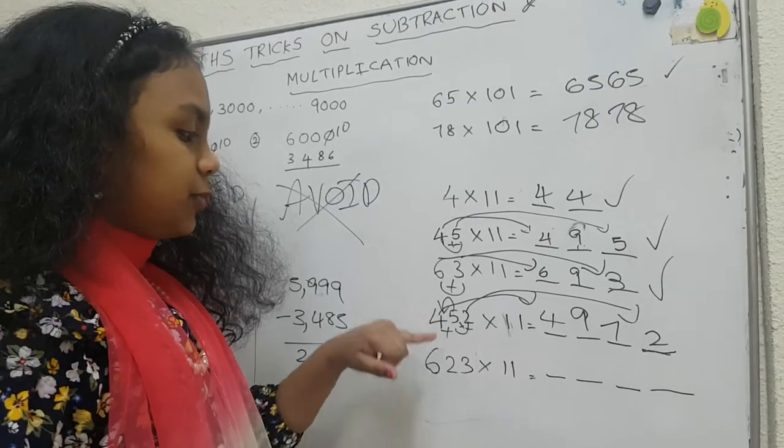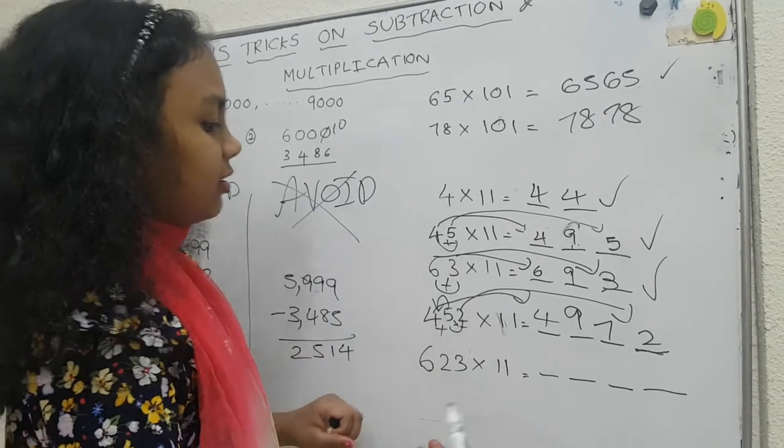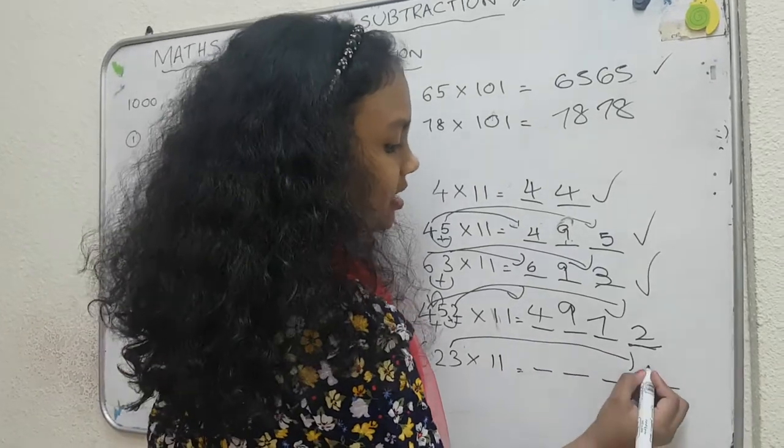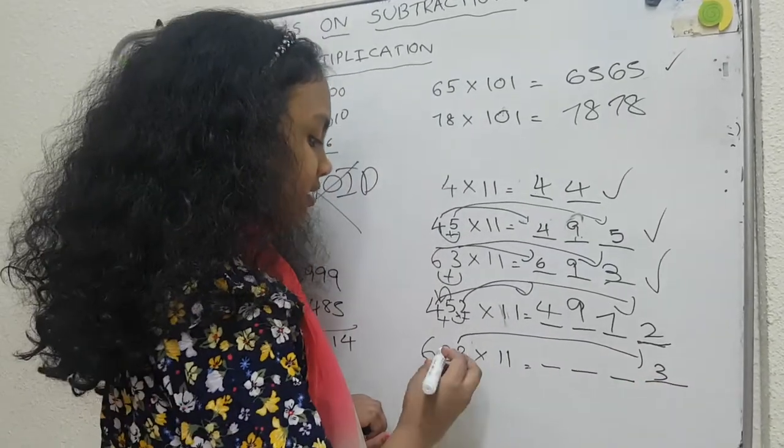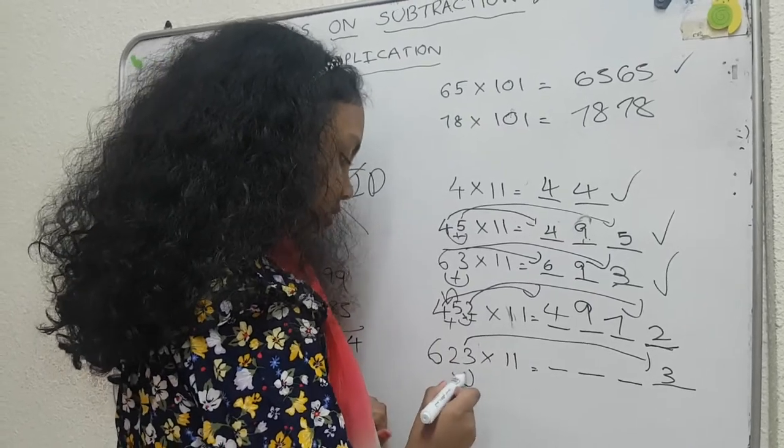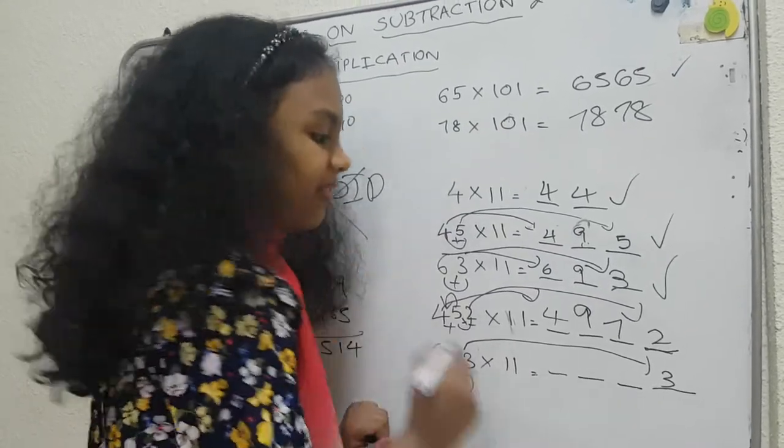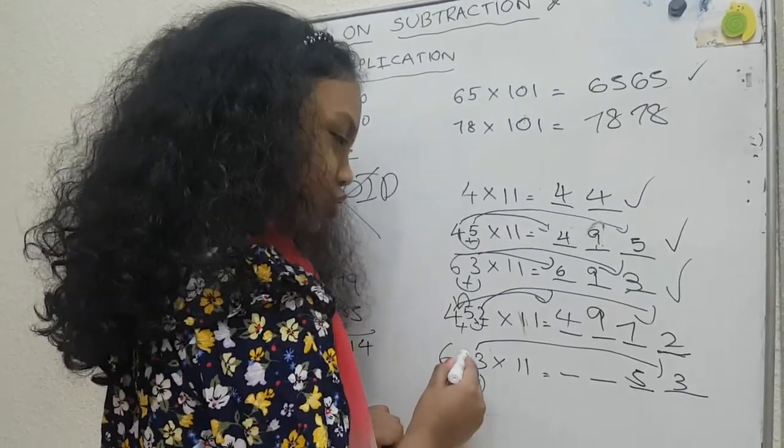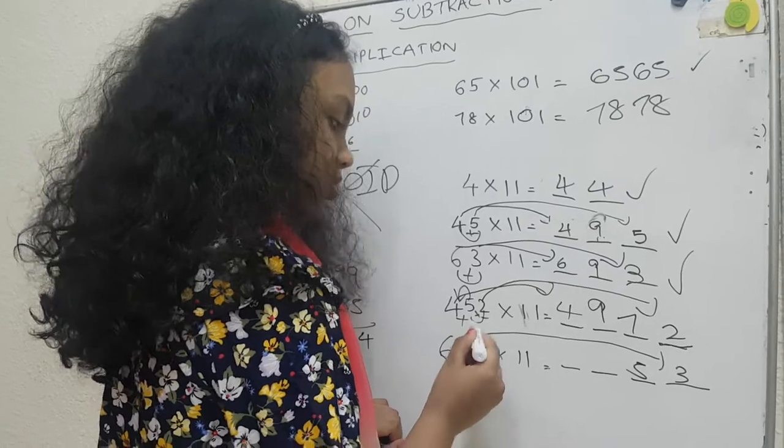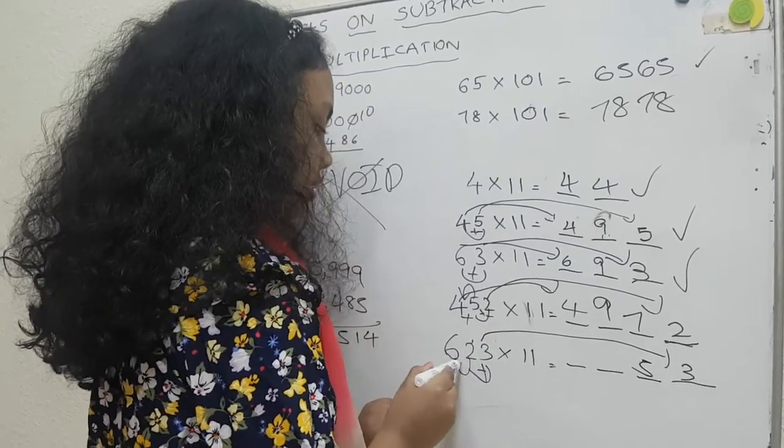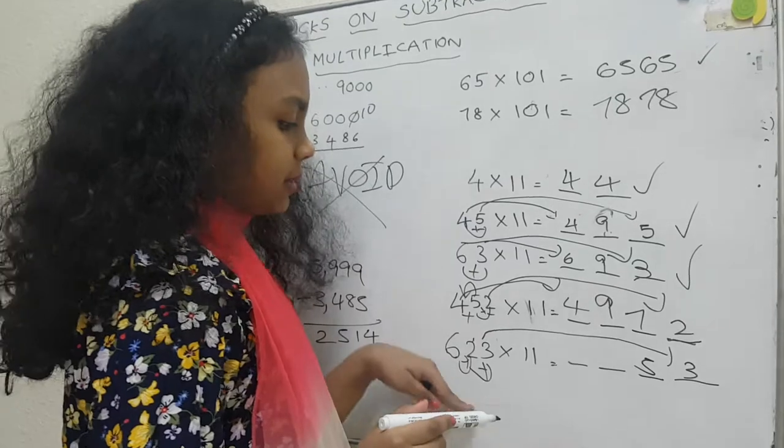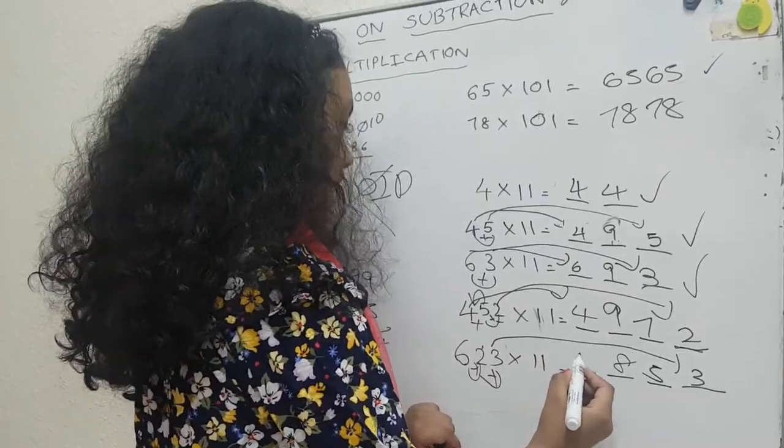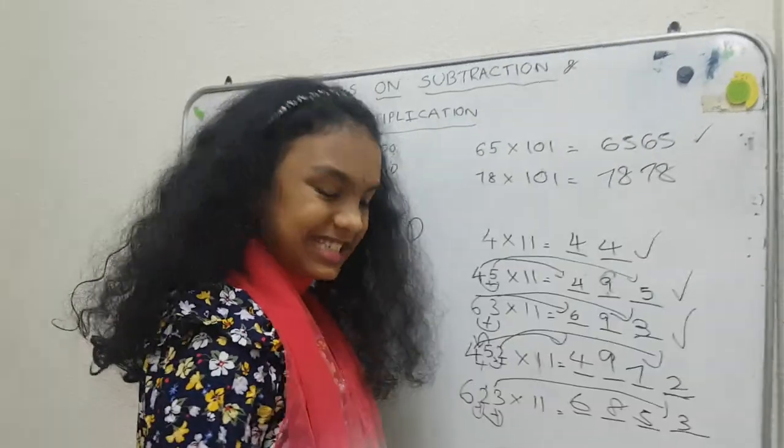And we have one more trick exactly which we did like this. Put 3 in ones place. Then, add 3 plus 2. What is the answer? 5. Yes. You're right. So, now, 2. Now, we need to add these 2 numbers. 6 plus 2 is 8. Right. 6 plus 2 is 8. And add this 6 here. Done. We finished it.